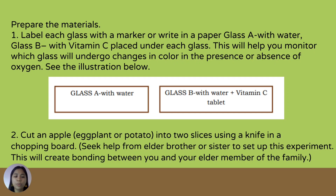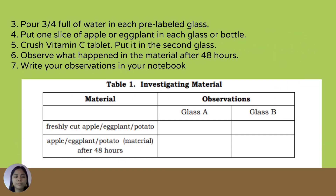Cut an apple, eggplant, or potato into two slices using a knife on a chopping board. You may seek help from an elder brother or sister to set up this experiment. Pour three-fourths full of water in each pre-labeled glass. Put one slice of apple or eggplant in each glass or bottle. Crush a vitamin C tablet and put it in the second glass. Observe what happened to the material after 48 hours and write your observations in your notebook.